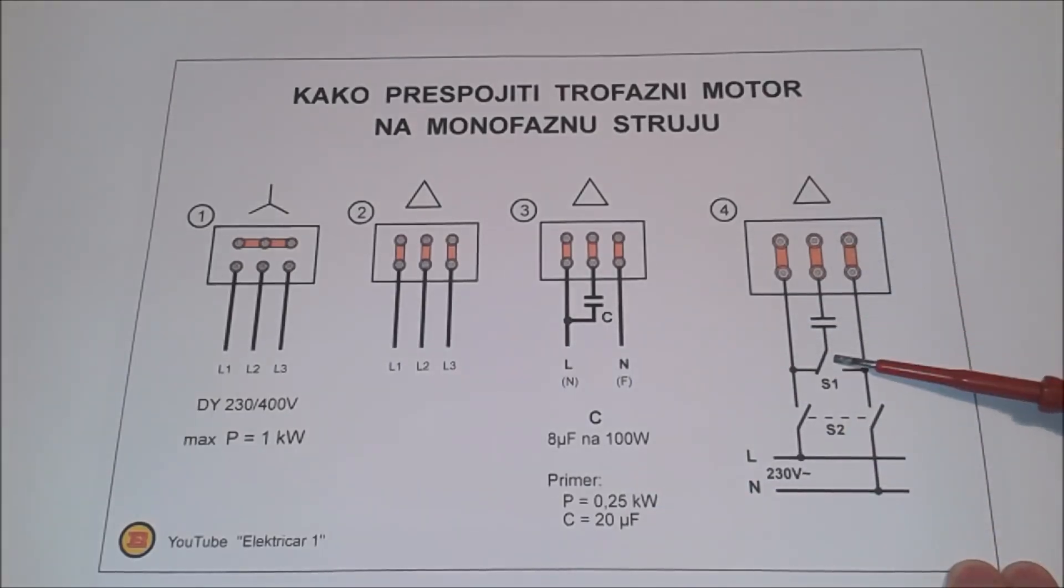In order to be able to change the direction of rotation of the motor, it is good to install one three-way switch that is visible on our design. Therefore, in one position we have the rotation of the motor in one direction and in another position of the switch we can see the rotation in the opposite direction.